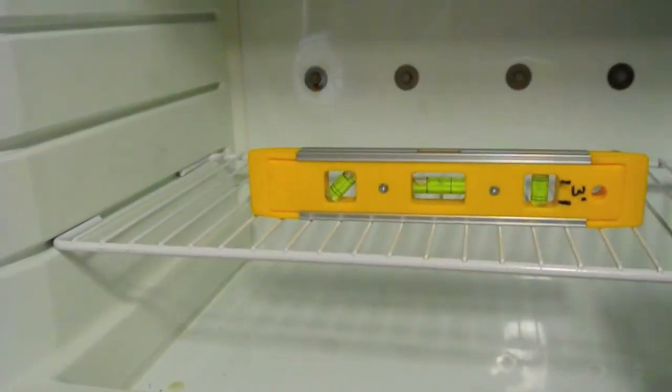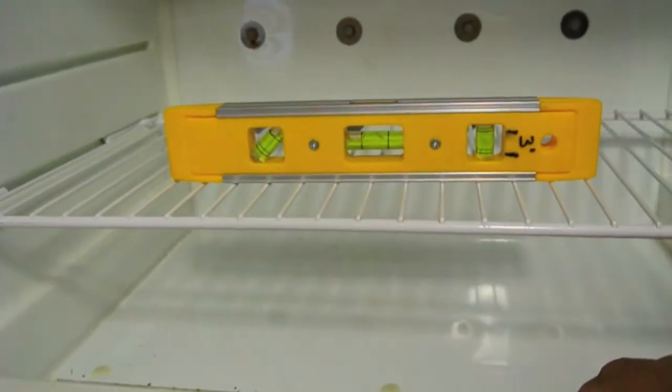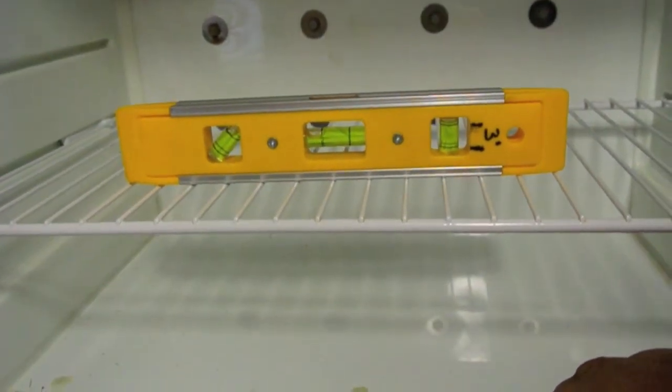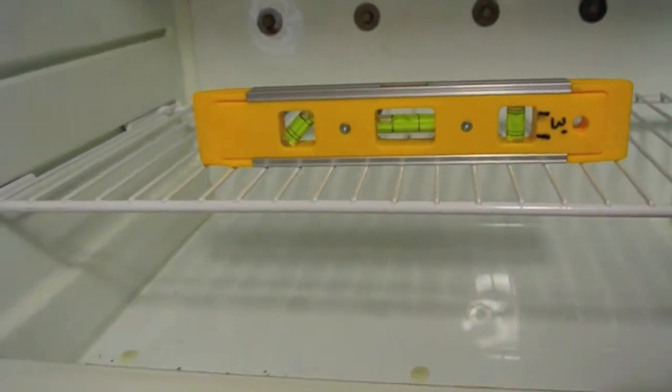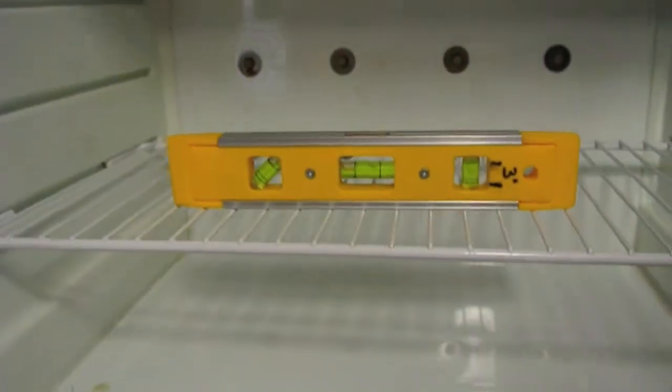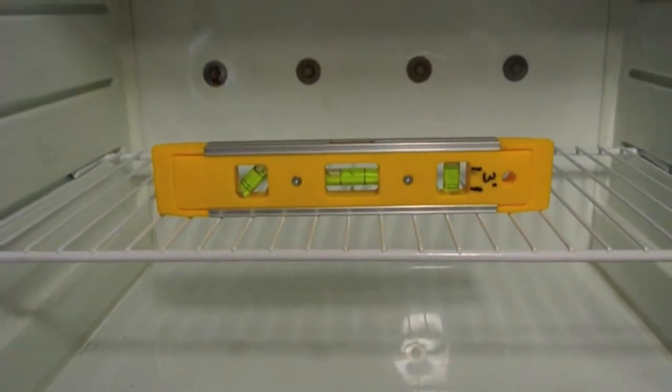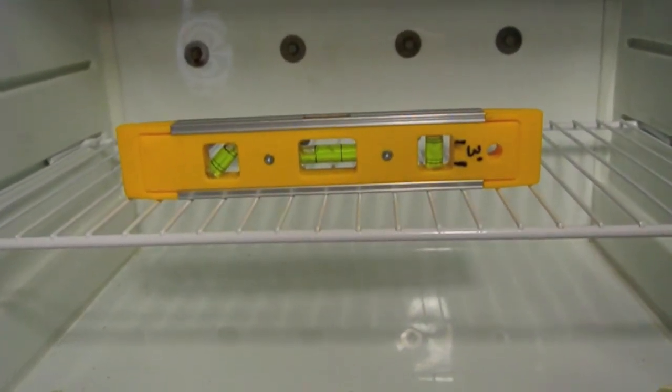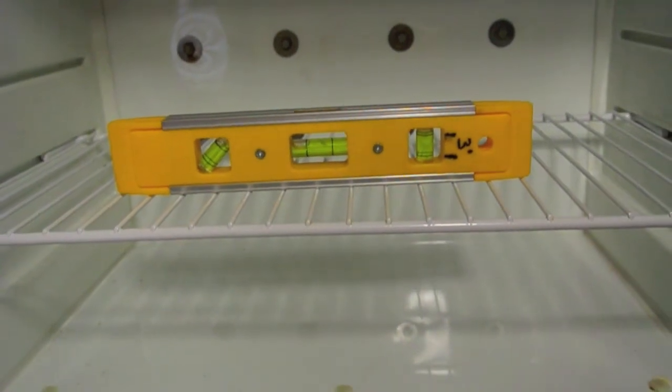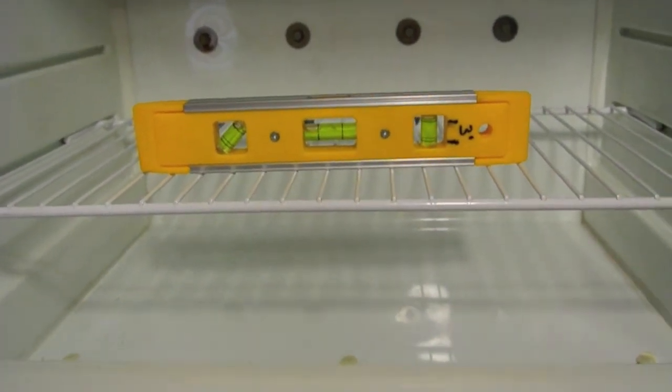So remember our specification: refrigerator said 3 degrees side to side, 6 degrees front to back. Since we've turned the orientation 90 degrees with refrigerator being fit into the motorhome, now we have 6 degrees side to side and 3 degrees front to back.